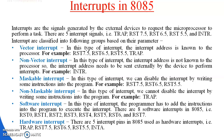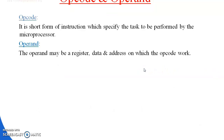These are all software interrupts. Next are hardware interrupts. There are five hardware interrupt pins in the 8085 used as hardware interrupts: RST7.5, RST6.5, RST5.5, and INTR. This covers the different types of interrupts.